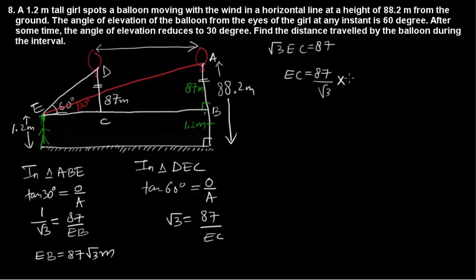Now rationalize the denominator: 87√3/3. Dividing, EC equals 29√3 meters.